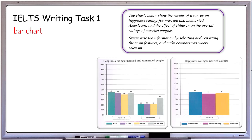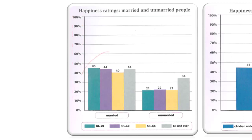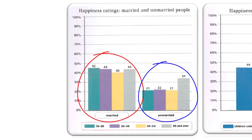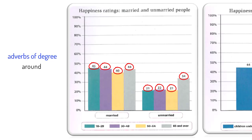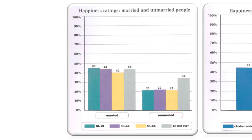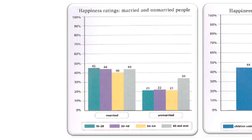As usual, we read the question box — the task — in the first place, paying attention to the keywords we're going to use in our summary. Now, let's take a closer look at the charts individually. The first chart represents happiness ratings across married and unmarried people in percentage terms, with ratings related to married people on the left and those related to unmarried people on the right. As you can see, the numbers are all exact, so for the most part we do not need to use adverbs of degree such as 'around' or 'approximately.' Is there any other parameter by which our information is divided? Here it is — age groups, each of which matches a certain color.